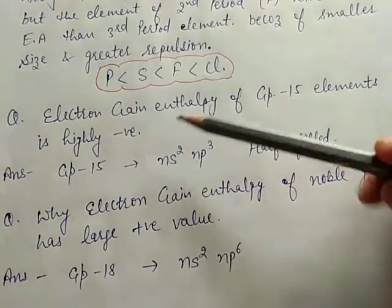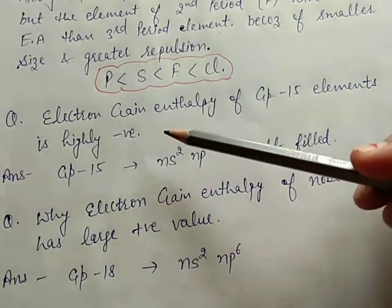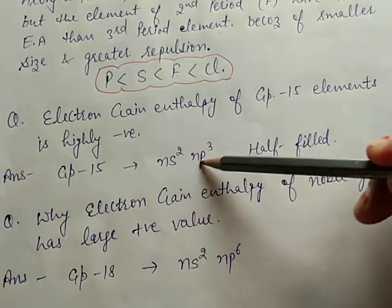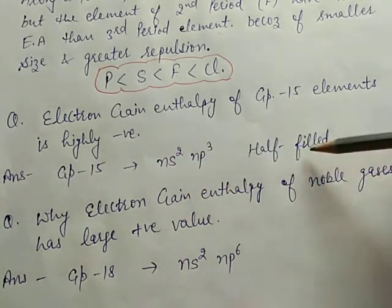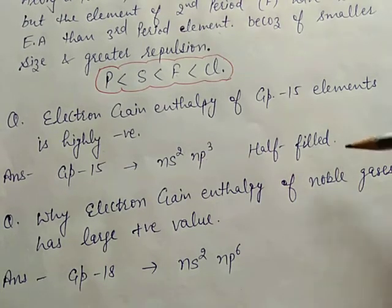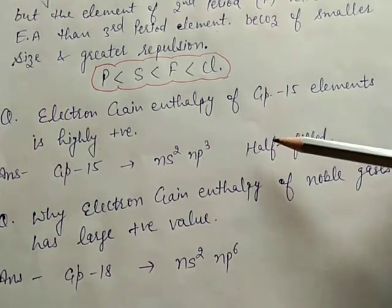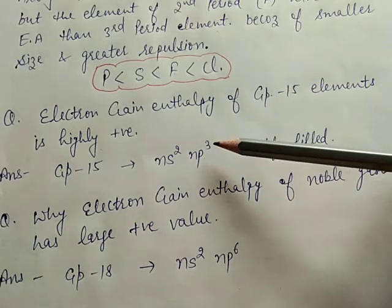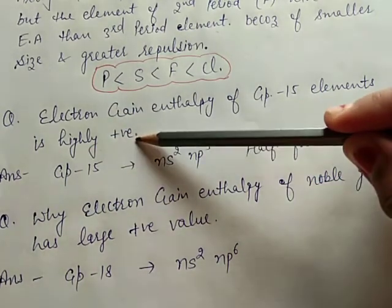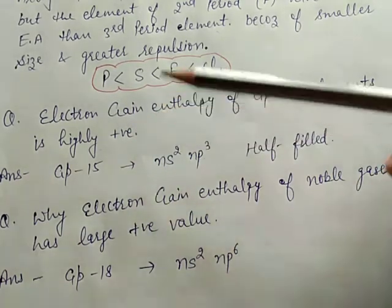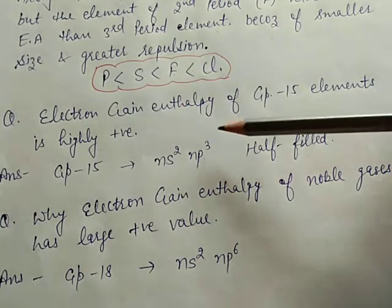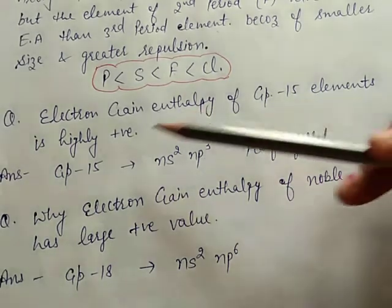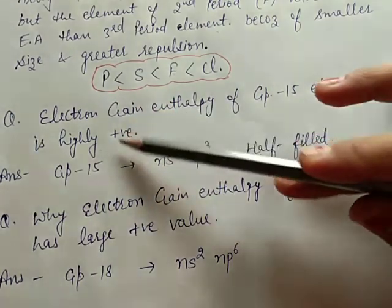Another question: why is the electron gain enthalpy of group 15 elements highly positive? Because group 15 elements have the configuration NS² P³ — exactly half-filled — which is very stable. So energy has to be supplied to add an electron, making the value of electron gain enthalpy positive. This reaction is endothermic because energy is absorbed during the reaction, so the value is positive.